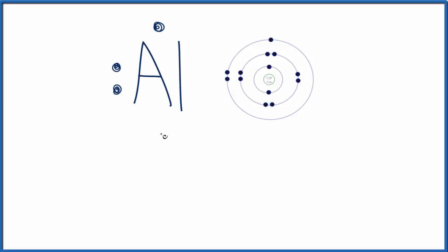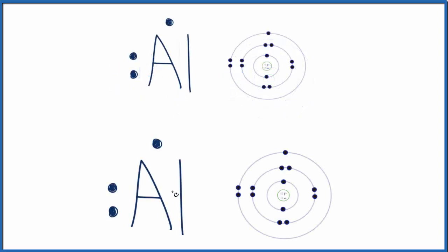But we're interested in Al3+. For Al3+, that 3+, that means we've lost three valence electrons. Electrons are negative, so you lose three electrons, you end up with a positive three. So let's get rid of three electrons around our aluminum. And then over here in our diagram, let's get rid of those as well.